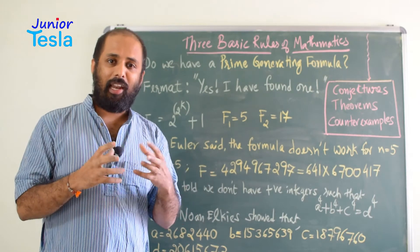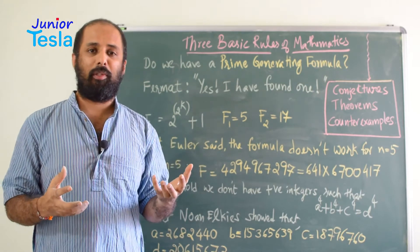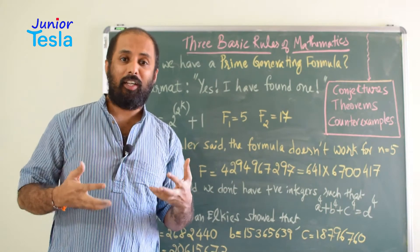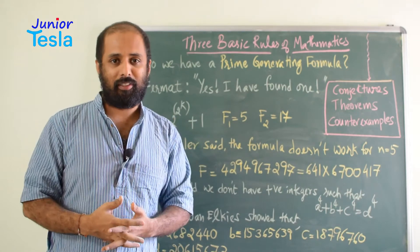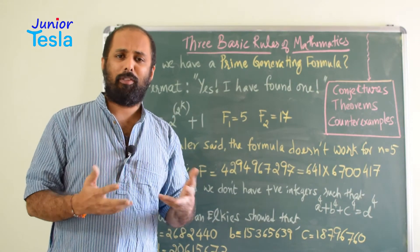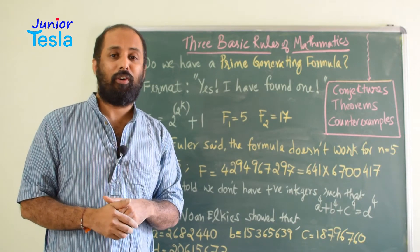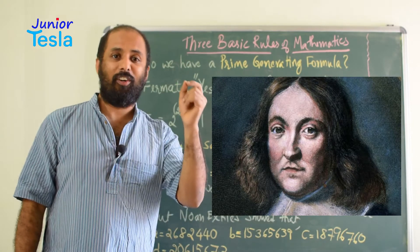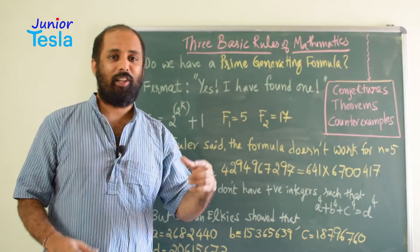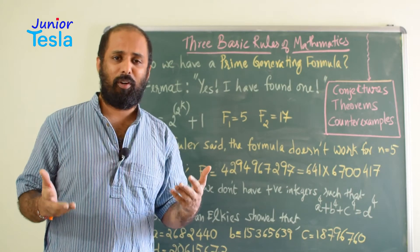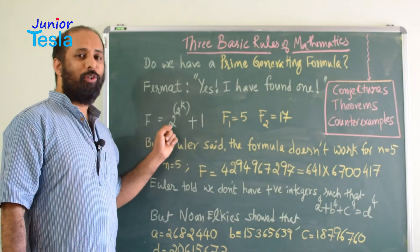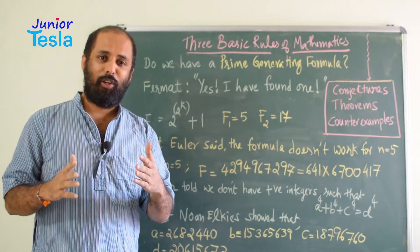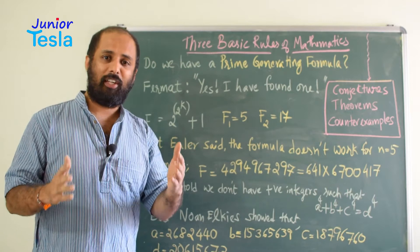This was a very big question for mathematicians about 500 years ago. There were many mathematicians who were trying to find a formula for generating only prime numbers. And there was a very famous French mathematician called Fermat. He told in the 17th century, yes, I have found a formula for generating only prime numbers. And all the mathematicians were so thrilled. He told: f is equal to 2 power 2 power k plus 1. If you put k equal to 1, 2, 3, etc., you always get a prime number.